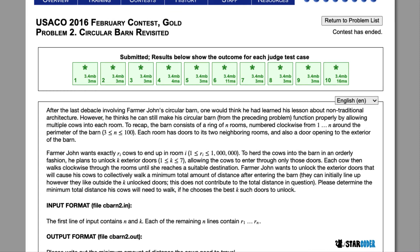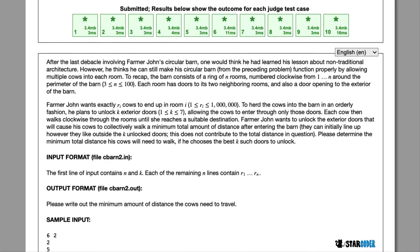Farmer John wants to have K exterior doors that the cows move through, and he wants to find the minimum total distance the cows need to travel.